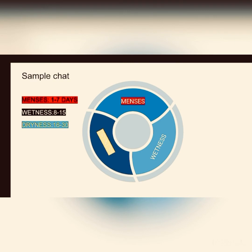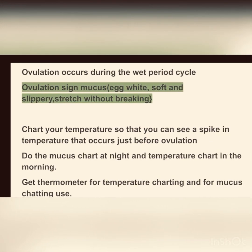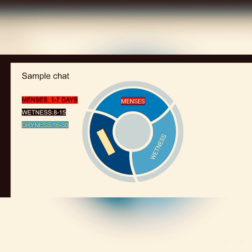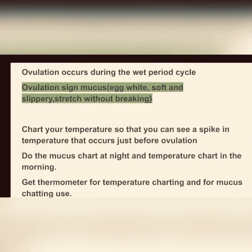Ovulation is supposed to occur during the wet period. That's why you should also use the calendar app — so that when you are seeing wetness, it tallies with the calendar's predicted ovulation dates. The calendar gives a range of days, which is not very precise on its own, but combining the mucus method with the calendar method and the temperature method will tell you exactly when you are ovulating.